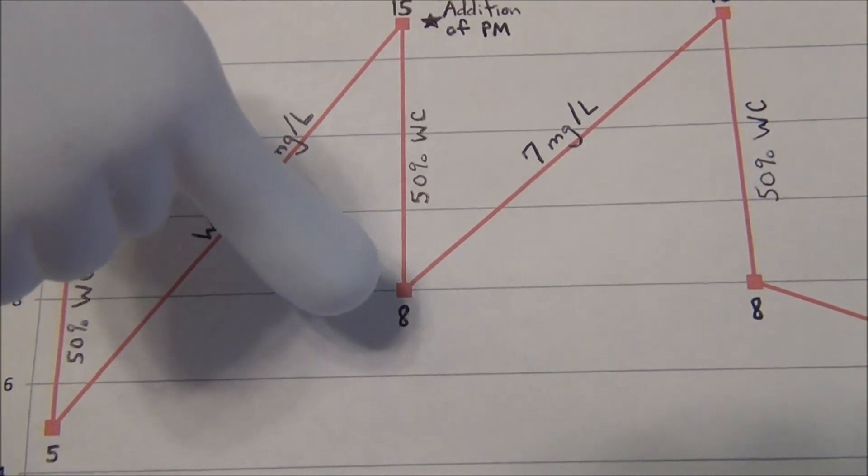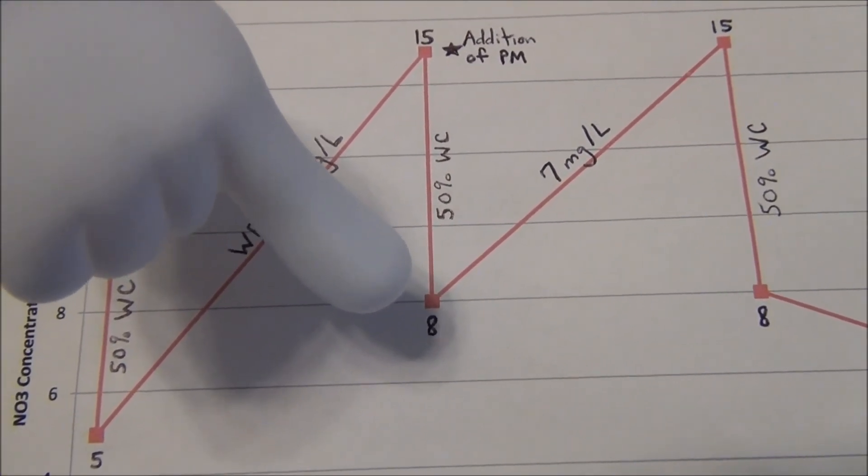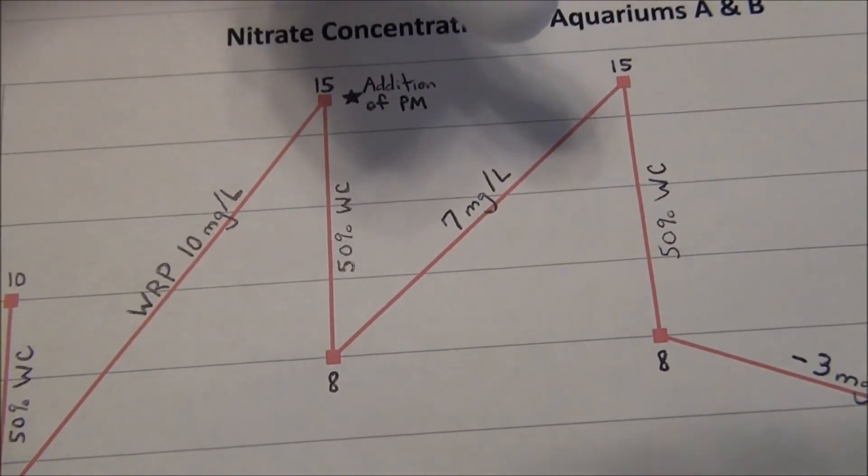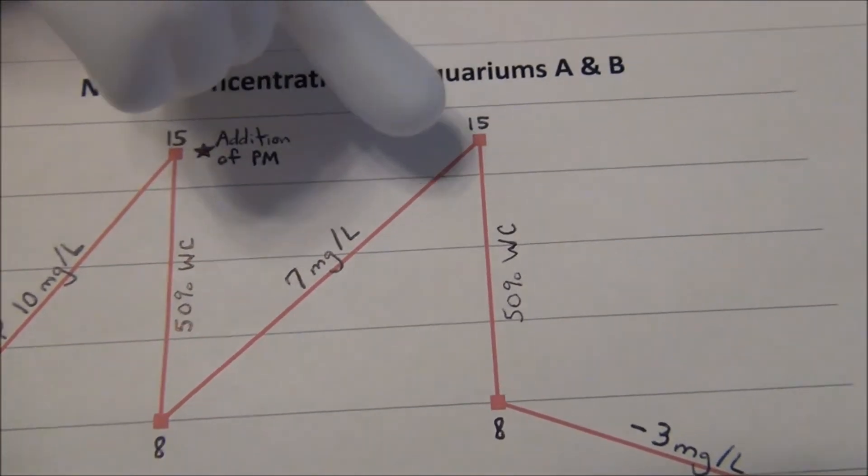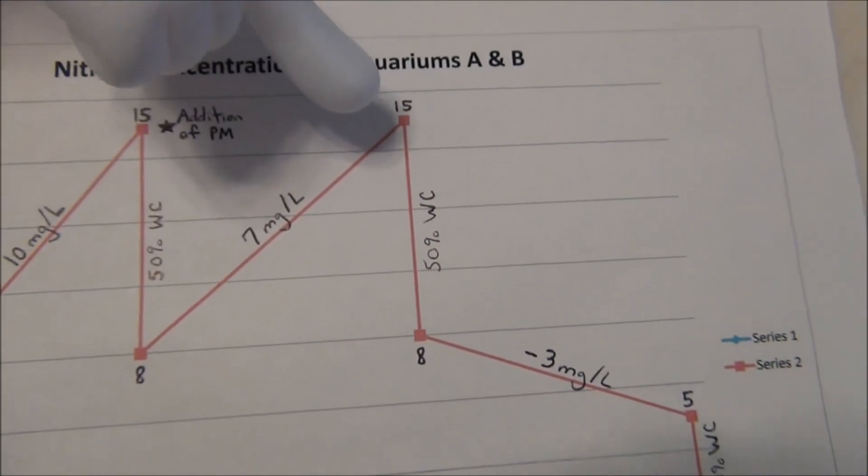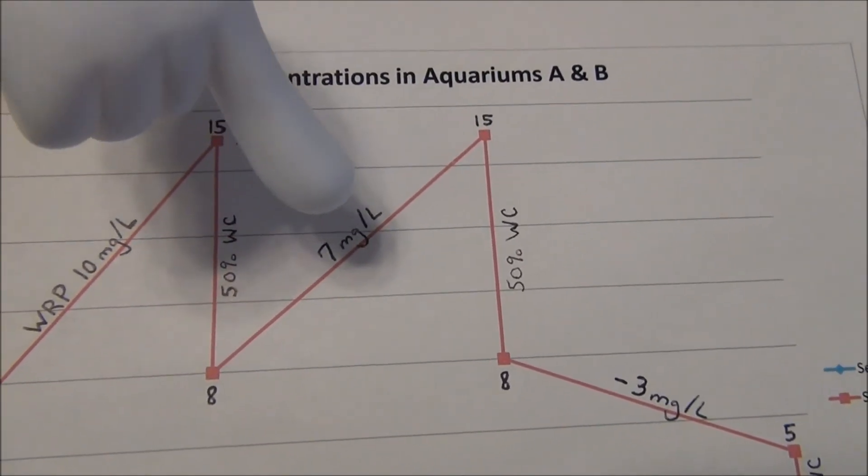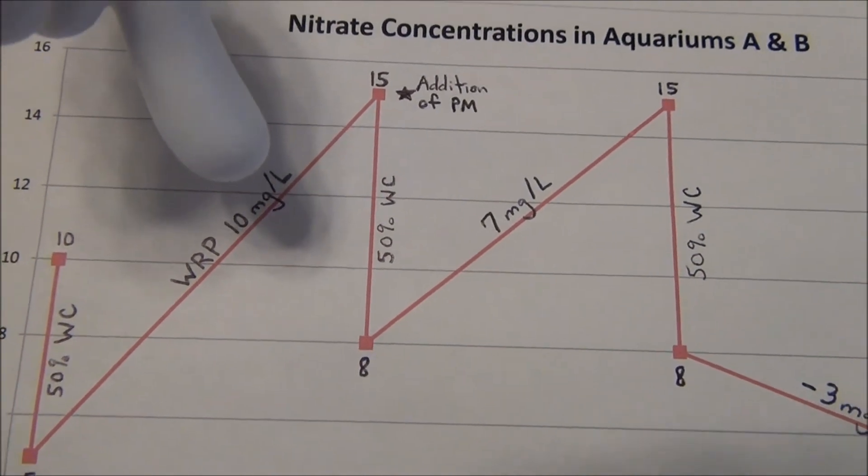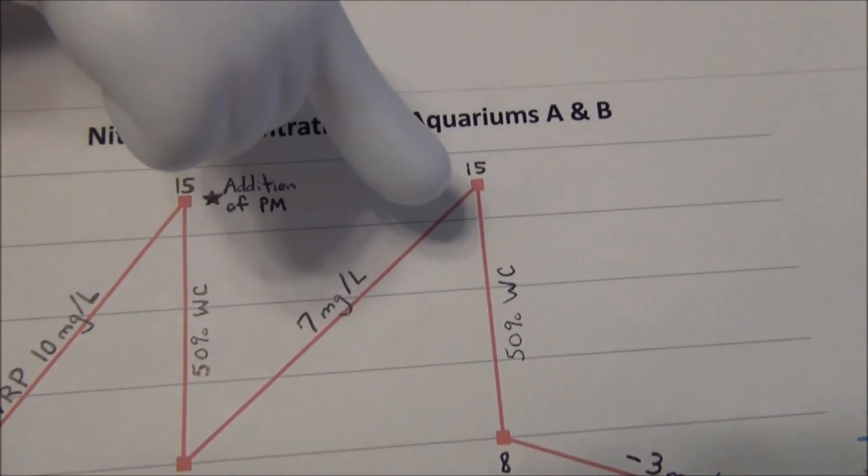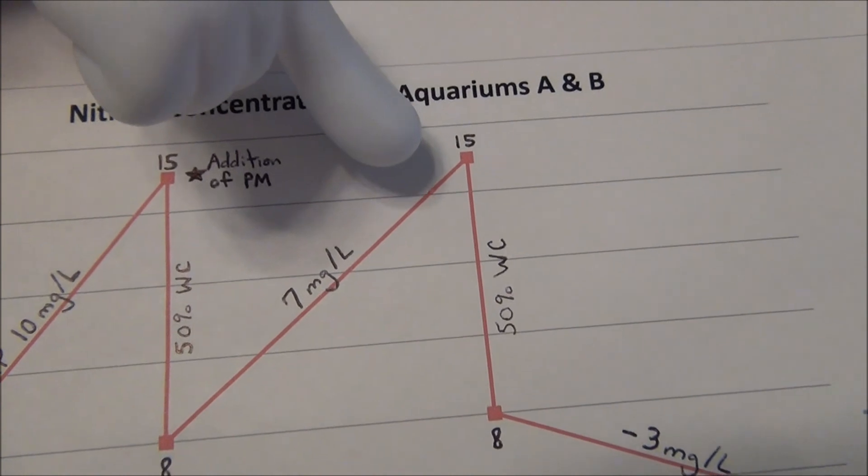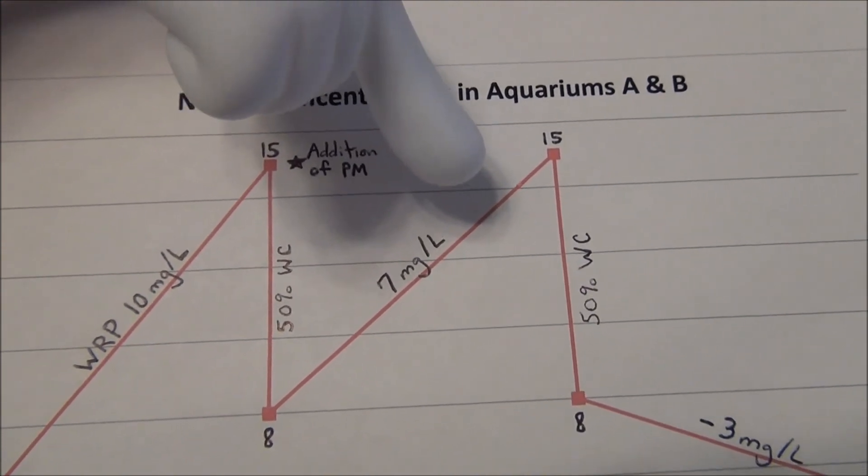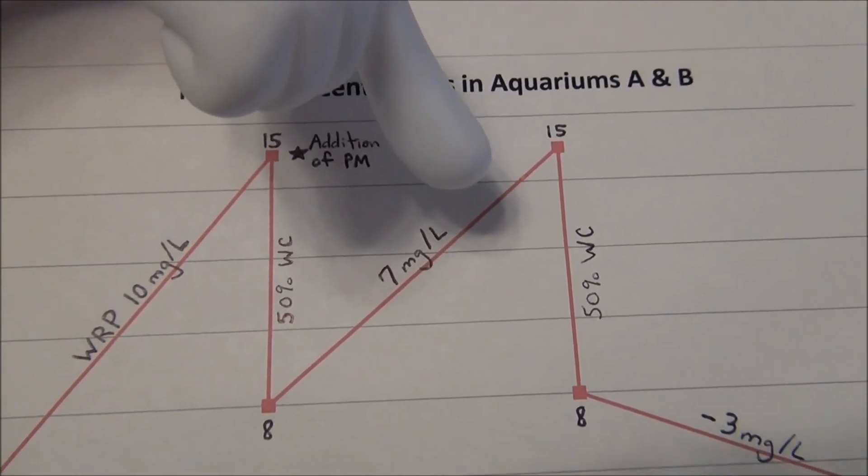We allowed one more week to elapse without conducting any water changes. The concentrations went from 8 milligrams per liter to 15 milligrams per liter on October 27th. So the increase was only 7 milligrams per liter. Right away you see that the weekly rate of production was 10 milligrams per liter. The new test should have been 18 milligrams per liter, but it was only 15. So the pond matrix is already removing 3 milligrams per liter of nitrate concentrations on a weekly basis.